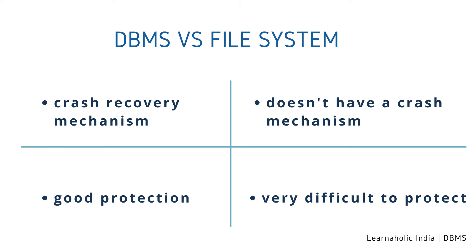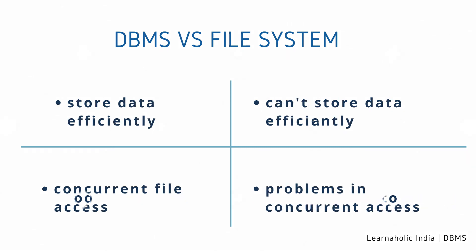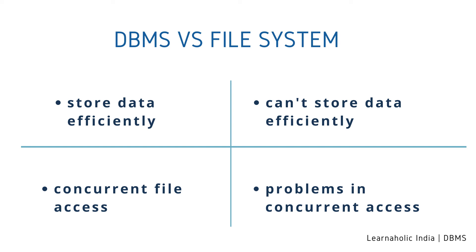Fifth: DBMS contains a wide variety of sophisticated techniques to store and retrieve data, whereas a file system cannot efficiently store and retrieve data. Sixth: DBMS takes care of concurrent access of data using some form of locking, whereas in a file system concurrent access has many problems, such as redirecting the file while another process is deleting or updating some information.